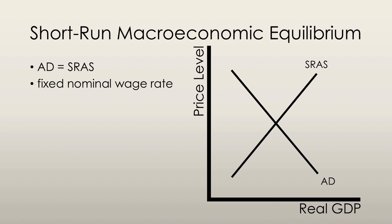In the short-run, the money wage rate is fixed and does not adjust to move the economy to full employment. And in the short-run, real GDP can also be greater or less than potential GDP.